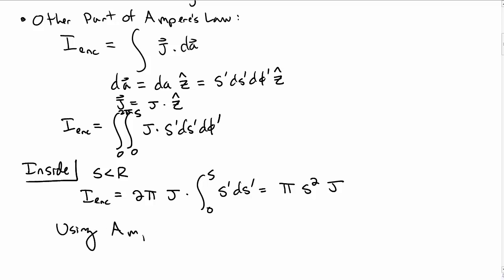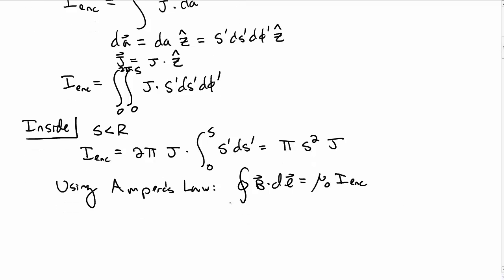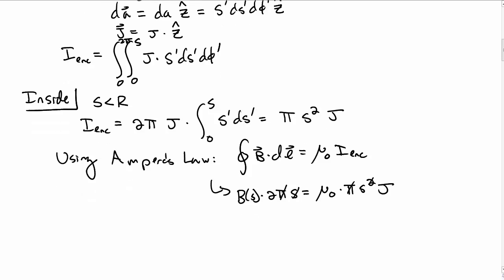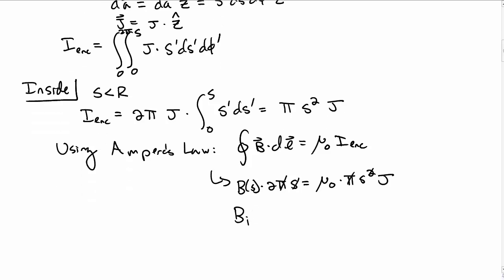Using Ampere's law, the closed line integral of b dot dl equals μ₀ i enclosed. So magnetic field times the circumference equals μ₀ π s² j. After cancellations, the magnetic field inside is μ₀ j s over 2.